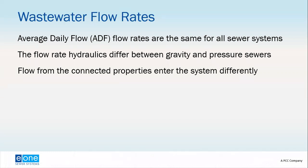In communities with septic systems and water wells — particularly where septic systems are failing — homeowners tend to produce a little less water. When you're designing a gravity sewer system, you also have to account for infiltration and inflow. With a pressure sewer system, we don't have infiltration and inflow, but with gravity sewer systems, you have extraneous flows coming from groundwater or stormwater getting into the system.